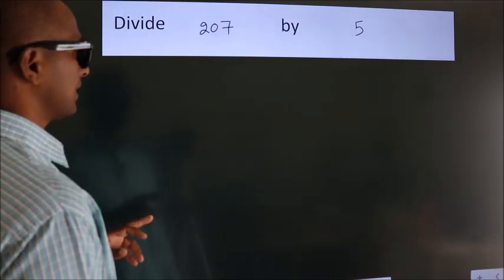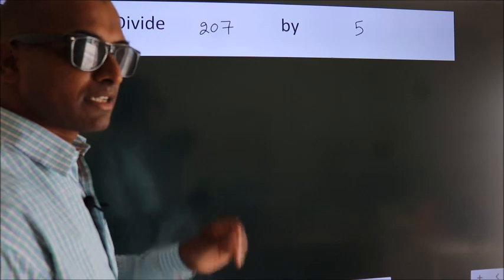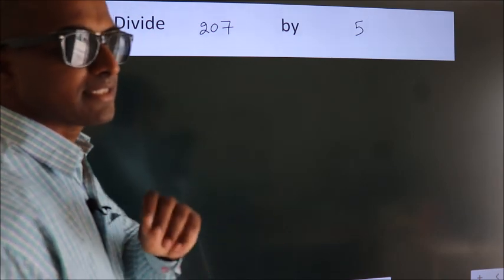Divide 207 by 5. To do this division, we should frame it in this way.